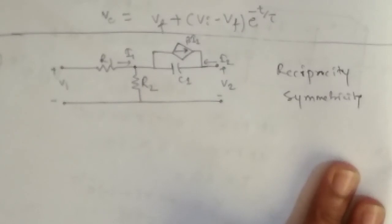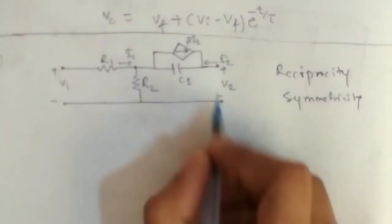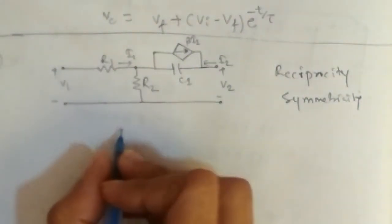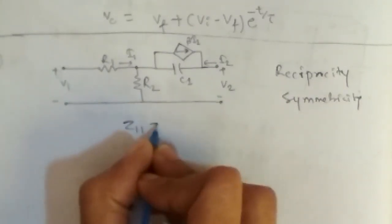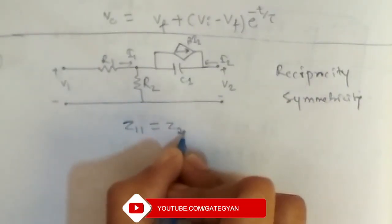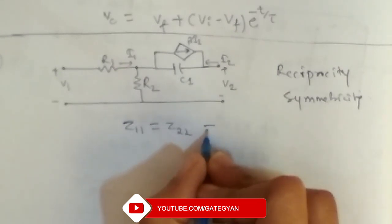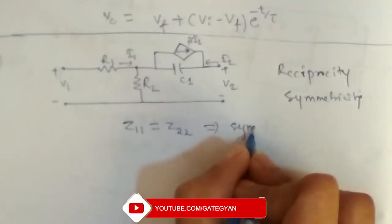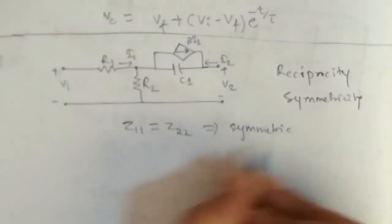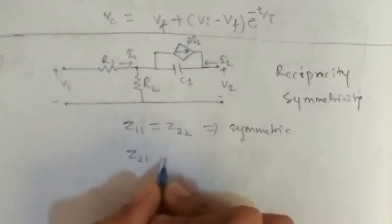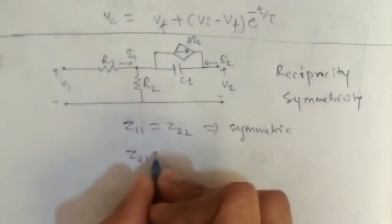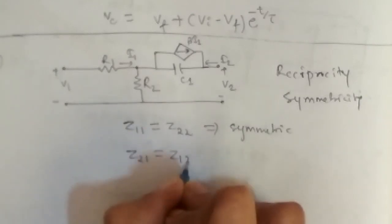for a network to be symmetric, z11 must be equal to z22. And for a network to be reciprocal, z21 must be equal to z12.